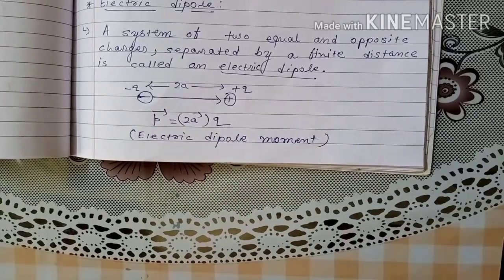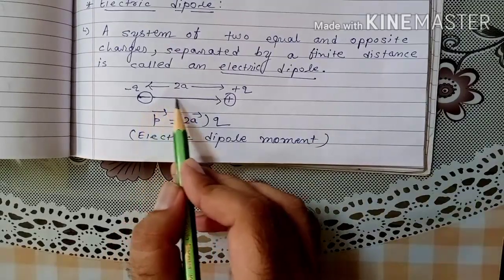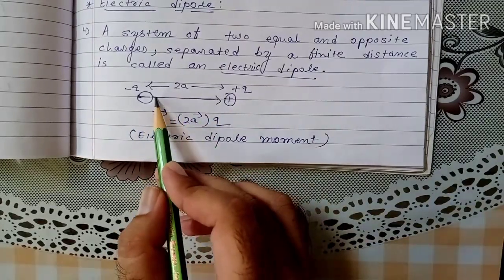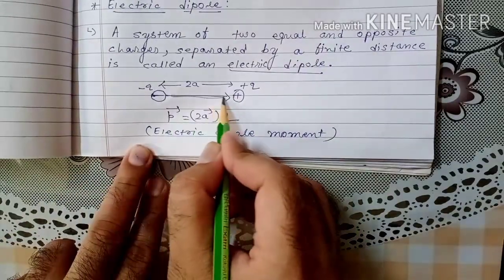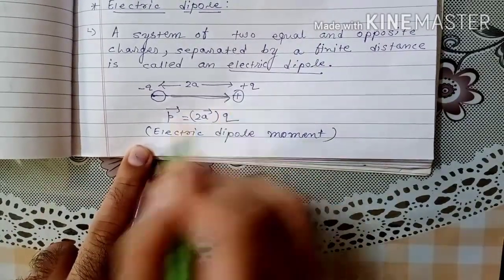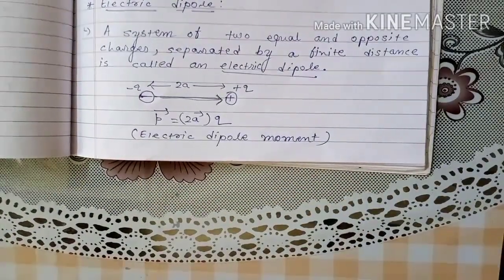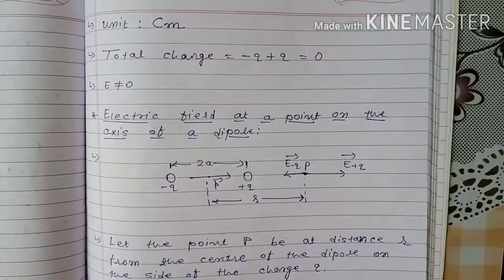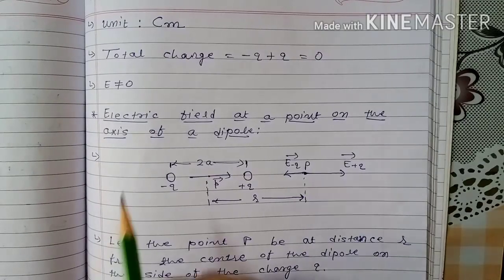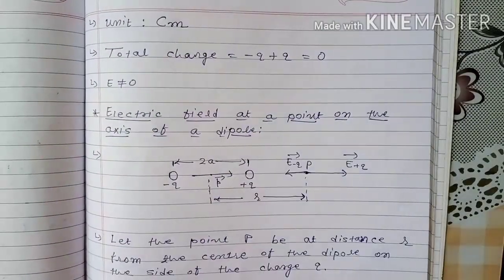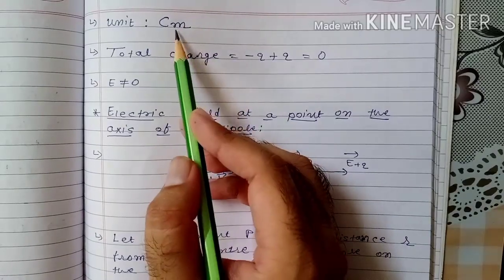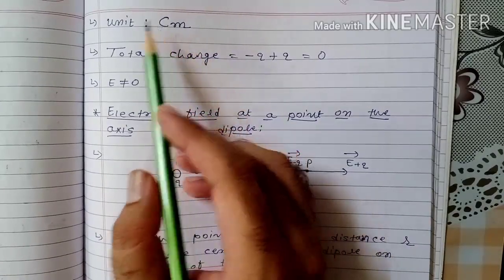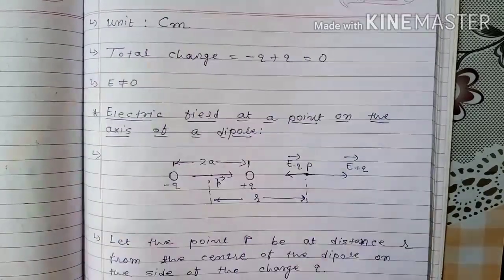The direction of Electric Dipole Moment is always from minus q to plus q, as shown by the arrow. The unit of electric dipole moment is coulomb meter — unit of charge is coulomb and unit of distance is meter, so the unit is coulomb meter.